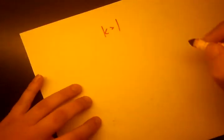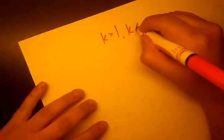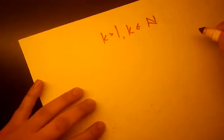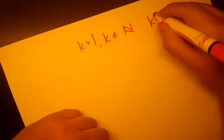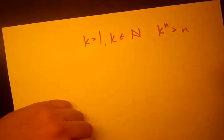And the second theorem we're going to use is going to be more of an inequality. We're going to try to prove that for all k greater than 1, and we're going to have k be a natural number again. We're going to prove that k to the n is greater than n.